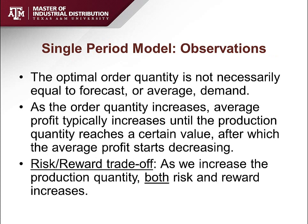When you analyze the newsvendor problem, the optimal order quantity is not necessarily equal to the average demand or the forecast value. For example, you may forecast selling 150 newspapers tomorrow, but the optimal quantity might be higher or lower than the forecast, because it is trying to find the trade-off between buying too many and disposing of them versus buying fewer and losing the opportunity to make extra profit.